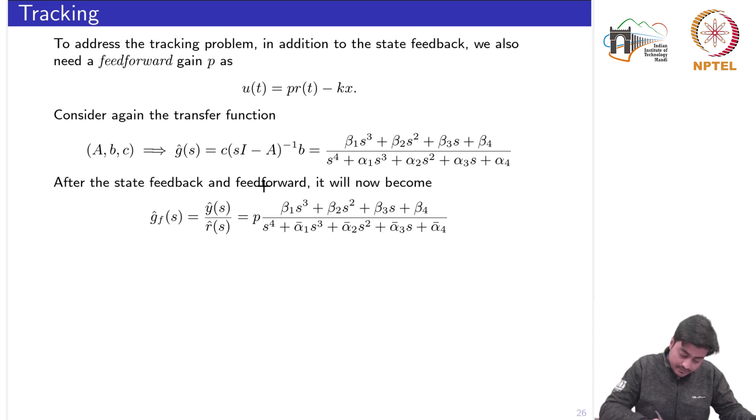We have seen earlier all these beta i's and alpha i's of the plant. After applying this state feedback and the feedforward the overall transfer function of the closed loop system would become from y hat over r hat.